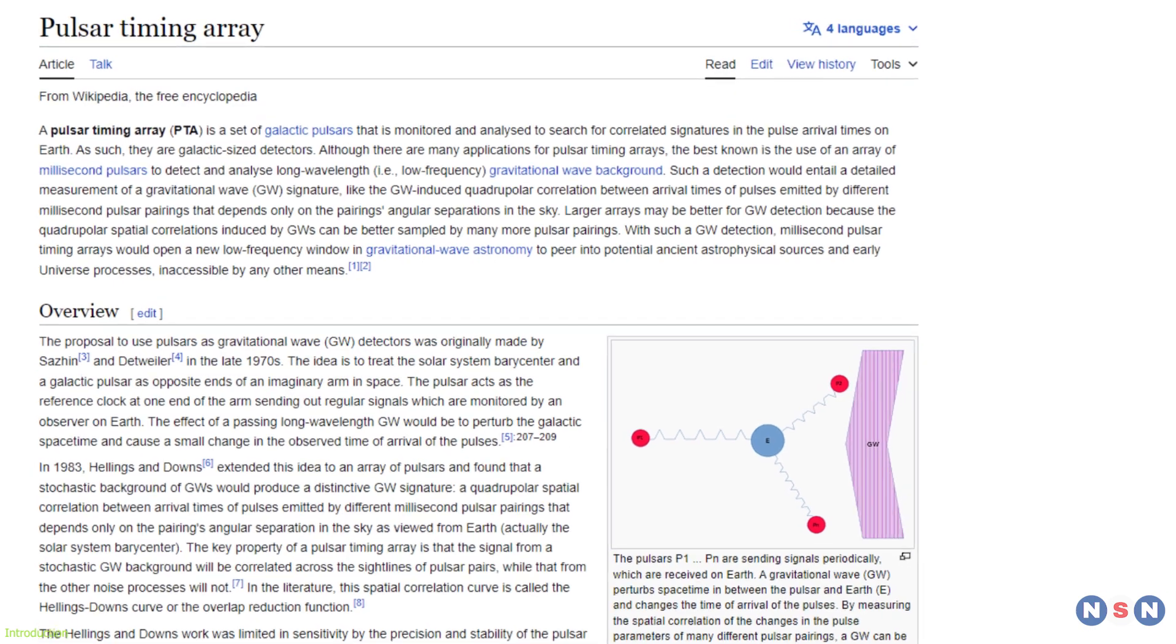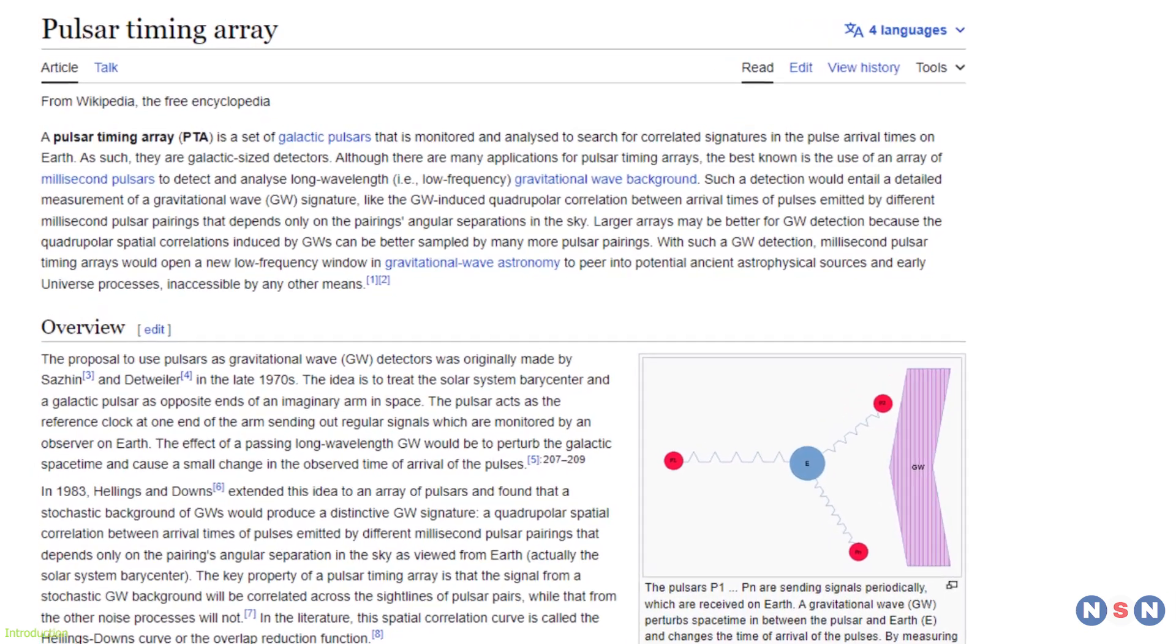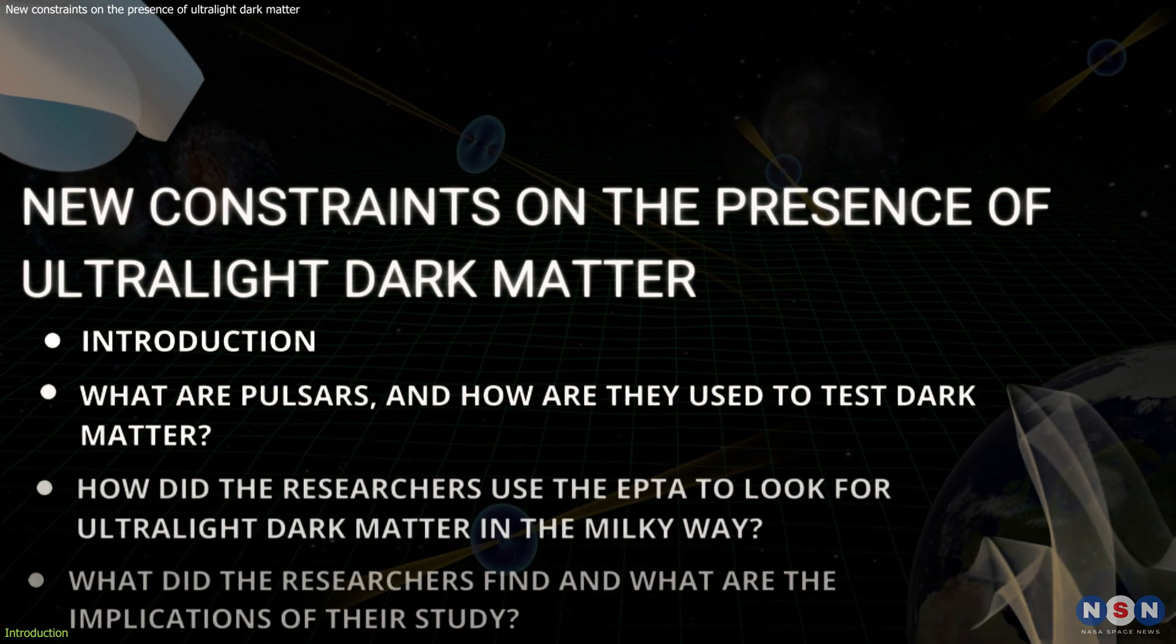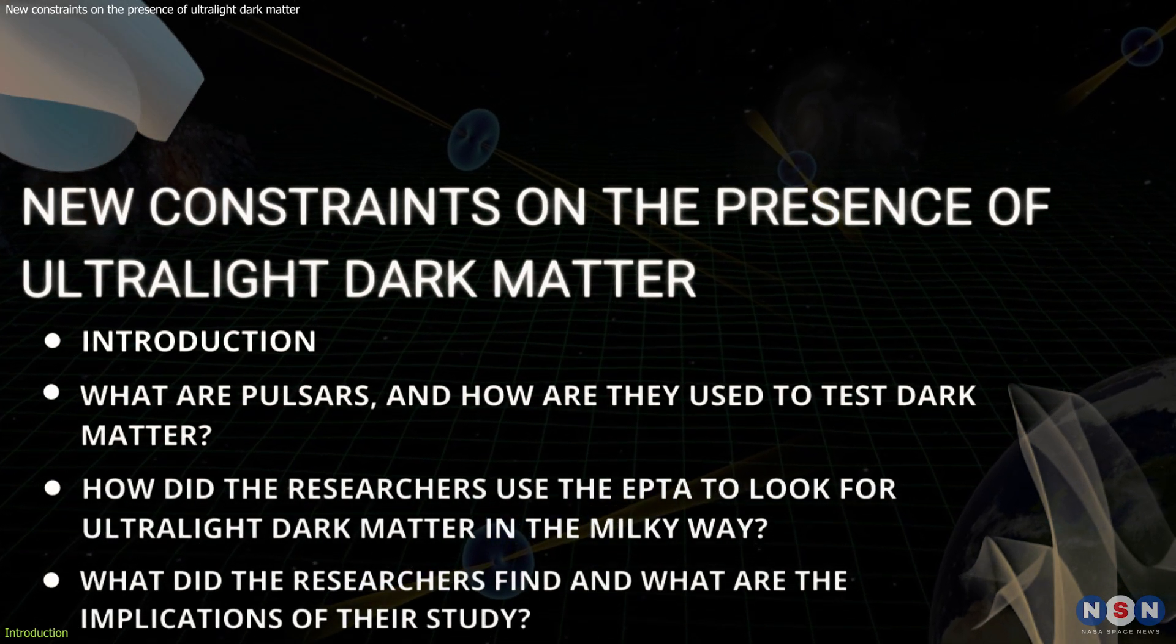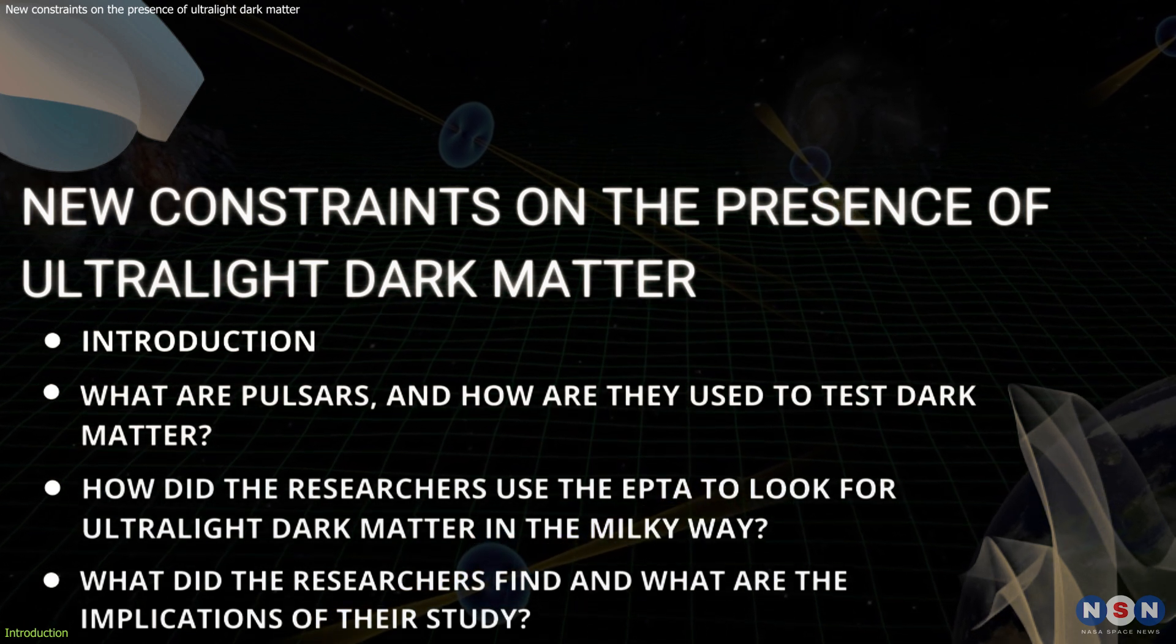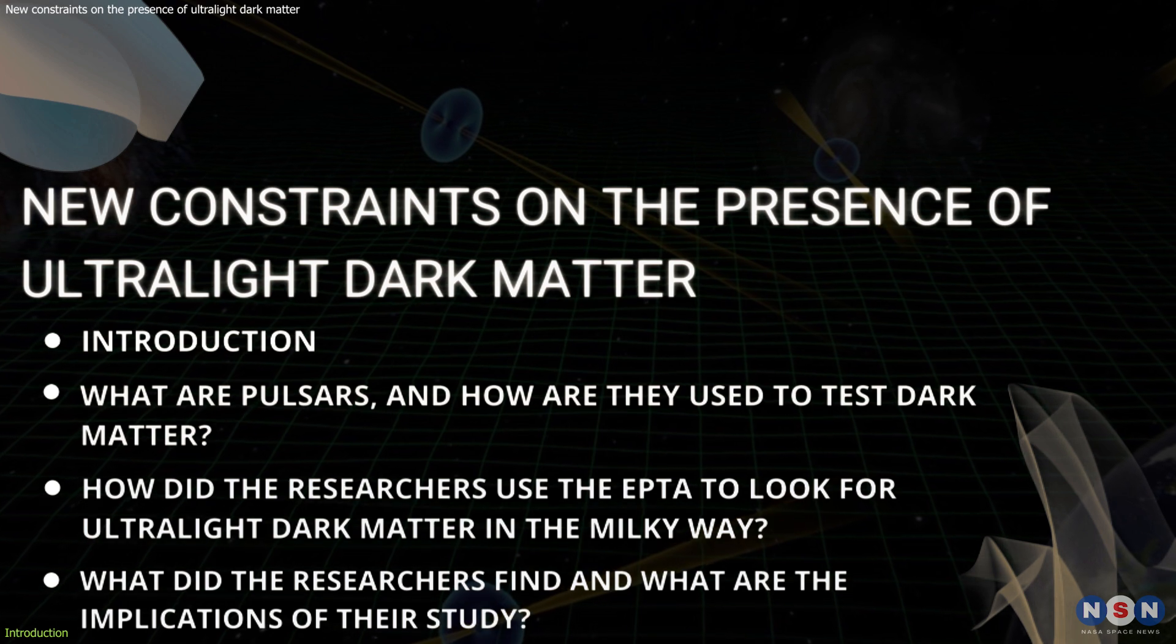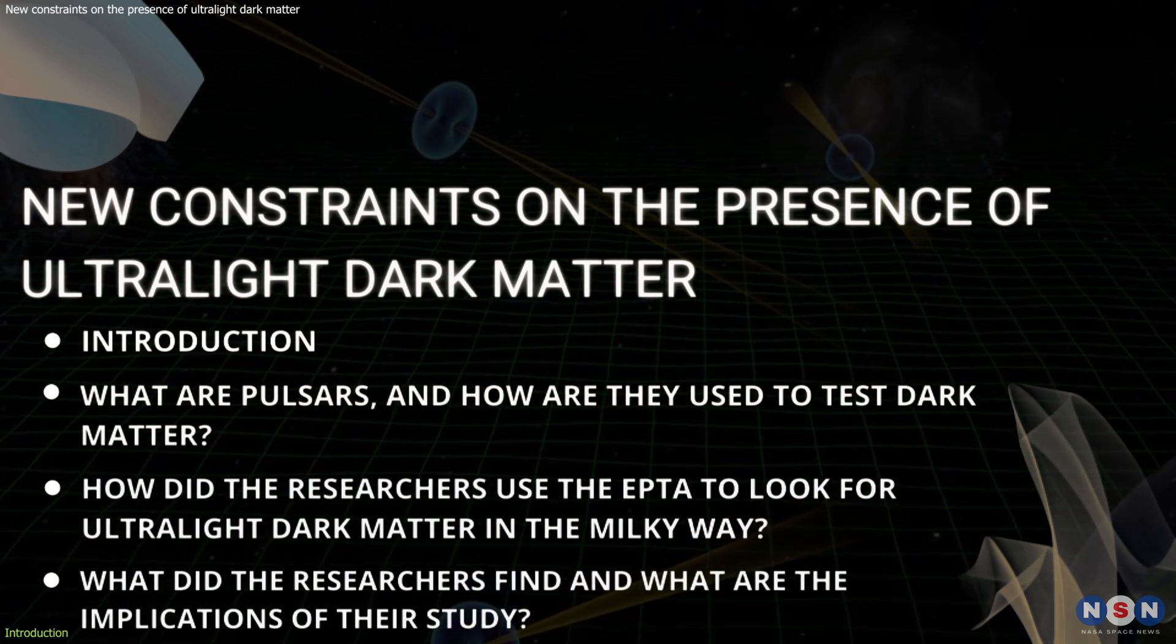One of these methods is pulsar timing, which uses the signals of pulsars to probe the nature of dark matter. In this video, I will tell you about a recent study that used pulsar timing to test the hypothesis that dark matter could be composed of ultralight particles, also known as axion-like particles (ALPs).